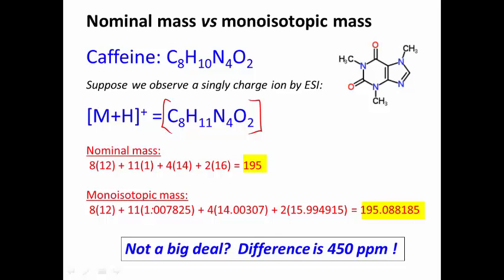The difference between these two numbers doesn't seem to be much, 0.088, but in fact 450 parts per million in the difference is a lot greater than the 10 part per million accuracy that the time of flight has. So make sure that you're dealing with these exact masses as they are from the table, the monoisotopic masses, for the correct isotopes that you're observing.